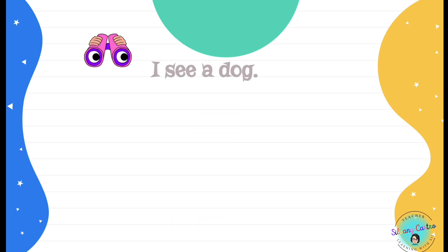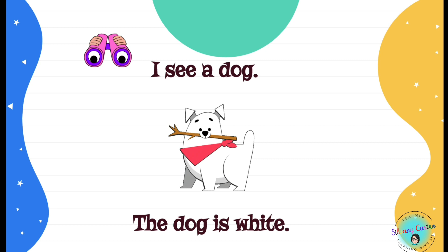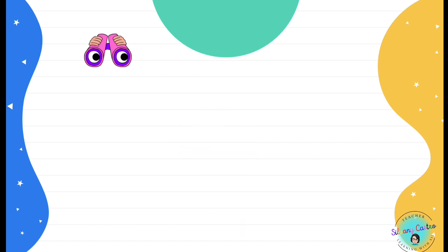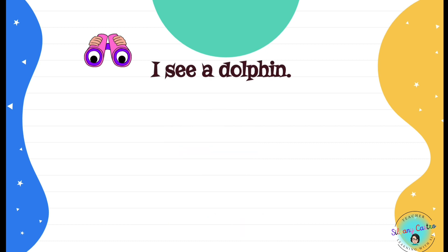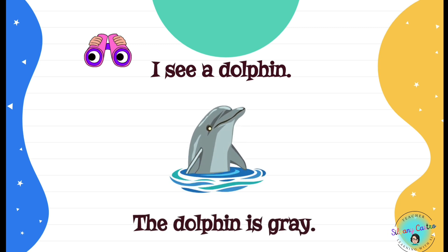I see a dog. Is the dog black or white? The dog is white. I see a dolphin. What color is the dolphin? The dolphin is gray.